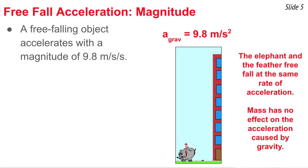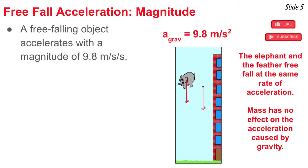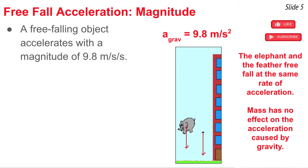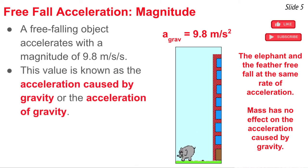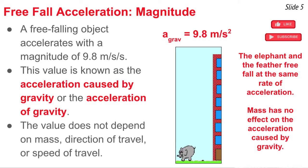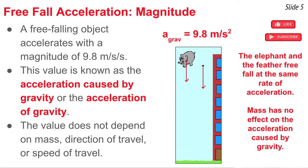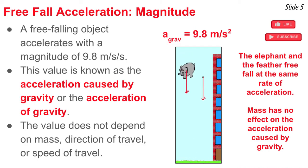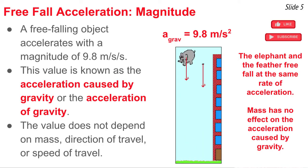A free falling object accelerates and changes its velocity. Acceleration is a vector with magnitude and direction. The magnitude of acceleration of a free falling object is 9.8 meters per second squared — known as the acceleration of gravity. This value does not depend upon the mass of the object, the direction it's traveling, or the speed at which it's traveling. It's a fixed constant of 9.8 meters per second squared on Earth. As shown in the animation of the elephant and the feather, if left to free fall, both objects would accelerate at 9.8 meters per second squared. Mass has no effect on the acceleration caused by gravity.